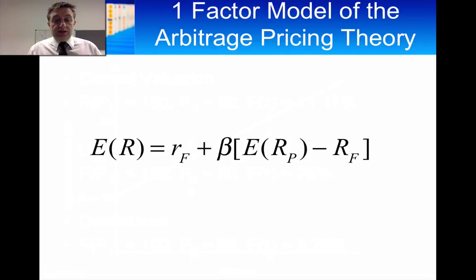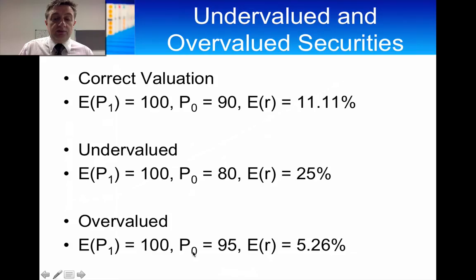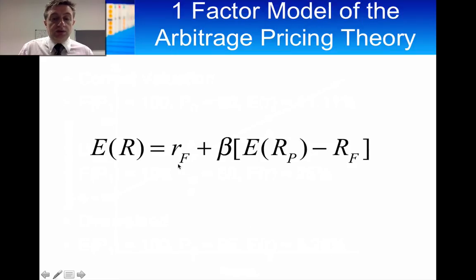So that is the one factor model specification. It's a straight line. We've got an intercept, which is the risk-free rate. We have the difference in the return in the portfolio and the return in the risk-free rate multiplied by the beta. And that's what we have here. So it's the risk-free rate plus beta times the expected return in the portfolio minus the risk-free rate. And that is the one factor model of the arbitrage pricing theory.